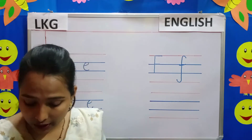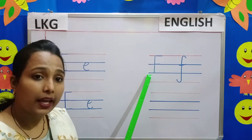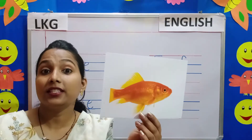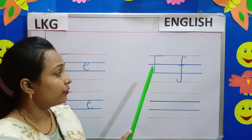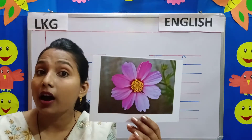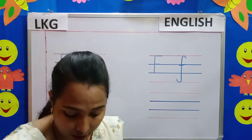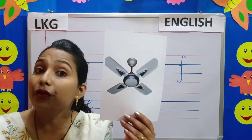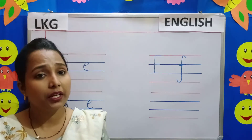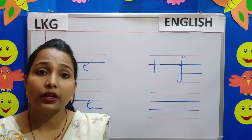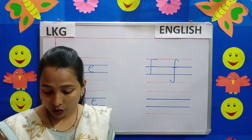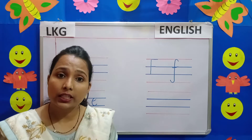Next we shall learn the letter F. Now what is this? This is a fish. F for fish. Next we have F for flower. Then we also have F for fan. There are many other words that begin with the letter F — for example, F for frog, fox, fat. So now children, you know the words with letter F.